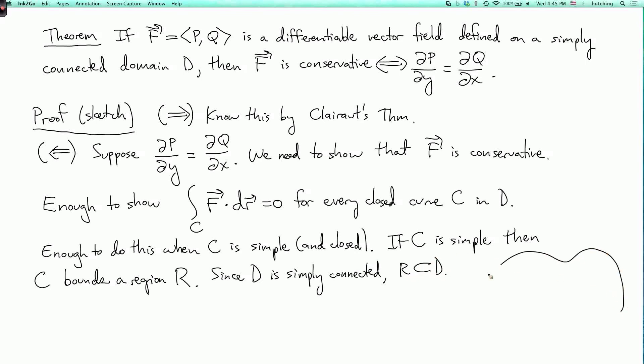Let me draw a picture to see what the point is here. So here's our domain D, and here's our curve C, and C bounds some region R, which looks like this. The claim is that all of that region R is contained in the domain D. That's true basically because D doesn't have any holes. If D had a hole like this, then this part of the region R over here would not be in the domain D, and that would be a problem. But D doesn't have any holes, so all of the region R is going to be contained in D.